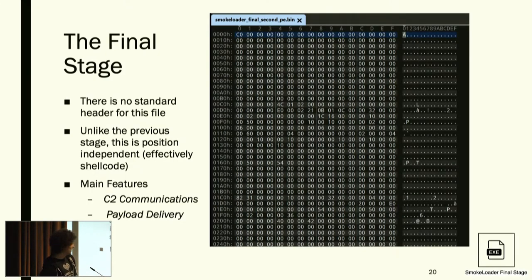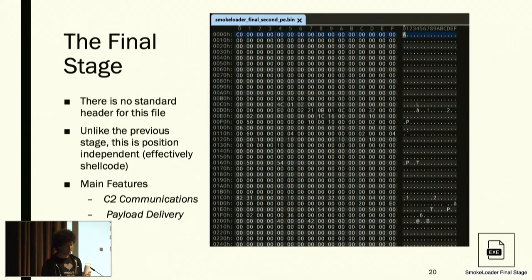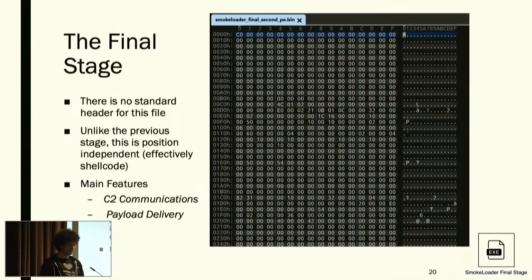The final stage has no PE header — it's not a valid Windows executable. It functions as shellcode: position-independent code that resolves its own access. Normally, the Windows loader properly sets up a PE in memory and resolves function calls, but shellcode doesn't have that. The main features of this final stage are just C2 communications and injecting and receiving payloads — that's all it really does.